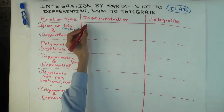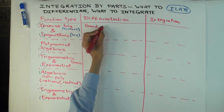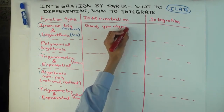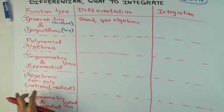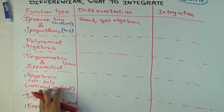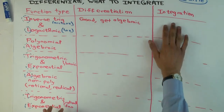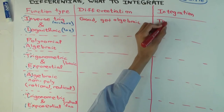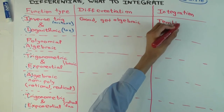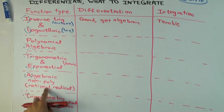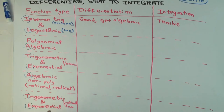This is good to differentiate because you get algebraic expressions — algebraic could be rational functions, could be radicals. If you have arcsin you get the square root thing, but they'll be algebraic. What about integration? Well, we don't really know how to integrate these, so these are terrible to integrate. Don't think about integrating these functions; think about differentiating them because you get algebraic, generally non-polynomial algebraic things.